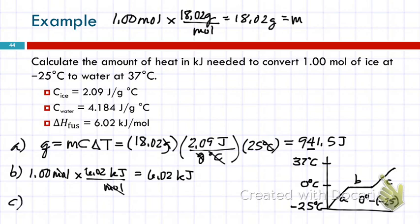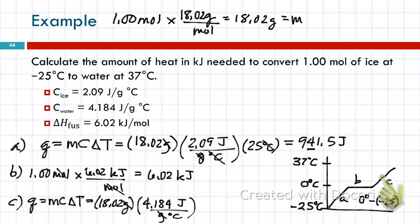Now, when the water, the melted ice, begins to warm up, then we need to use Q equals MC delta T again. The mass hasn't changed. It's still 18.02 grams. But the specific heat capacity is different. For water, it's 4.184 joules per gram degree Celsius. The grams cancel. And then we need delta T. So, for this one, the final temperature is 37, and the initial temperature is zero. 37 minus zero is 37. Times 37 degrees Celsius. And the degrees C cancel.